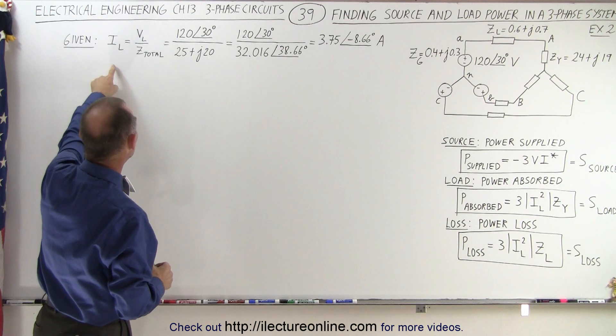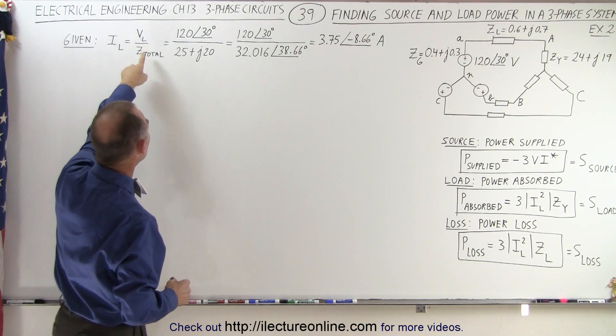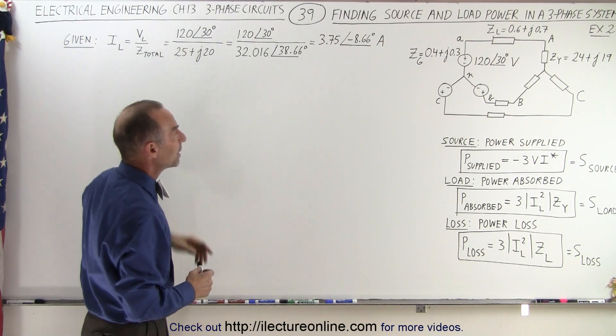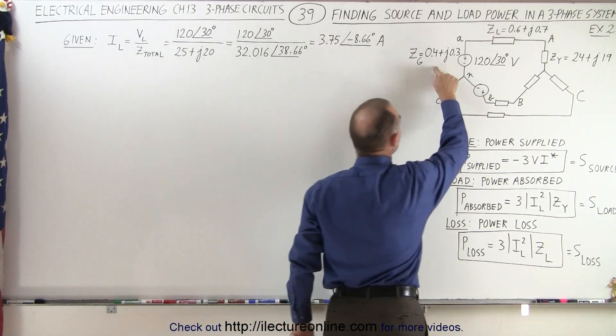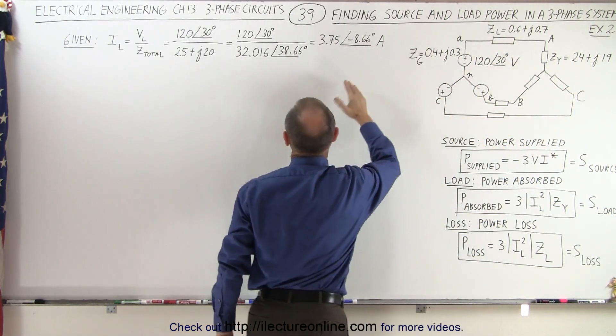Here, to make it easier, we've already calculated the current along the line. It's going to be the voltage from the source divided by the total impedance. Yes, we do have to include the impedance of the generator along the line and of the load in order to calculate the current.